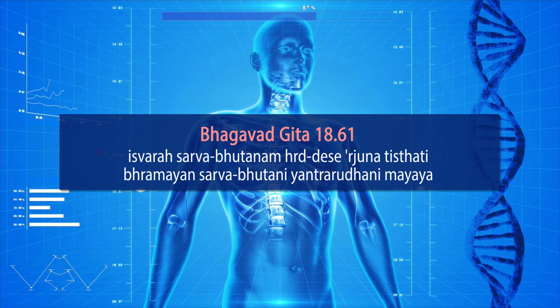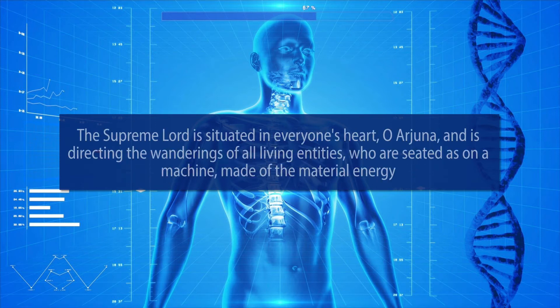The translation is as such: the Supreme Lord is situated in everyone's heart, O Arjun, and is directing the wanderings of all living entities, who are seated as on a machine made of the material energy. So we can see here that this material world is from ancient times — it is of our origin as such.